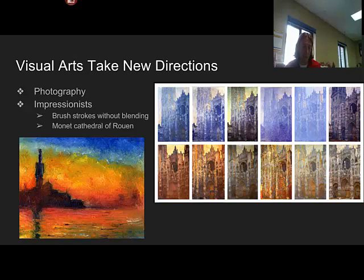Impressionists do a couple of different things. Looking at the brush strokes, they're really bold and unblended — the idea is the human eye can blend those colors together. Monet is one of the most famous. He paints the Cathedral of Rouen at different times of day, different times of year, in different weather — rain, snow, mist, fog — trying to capture the first impression across all those different conditions, cataloging them throughout.